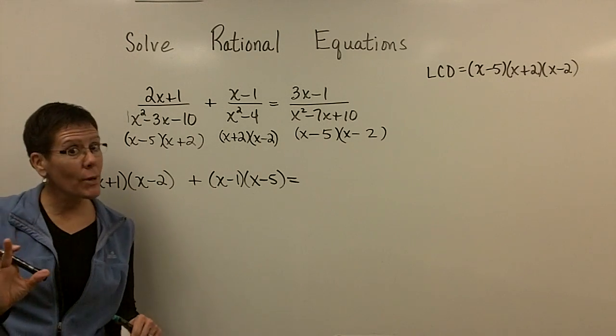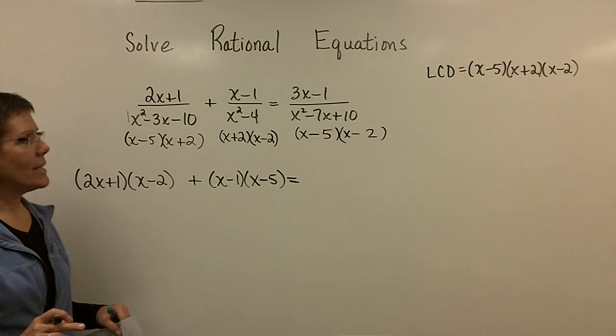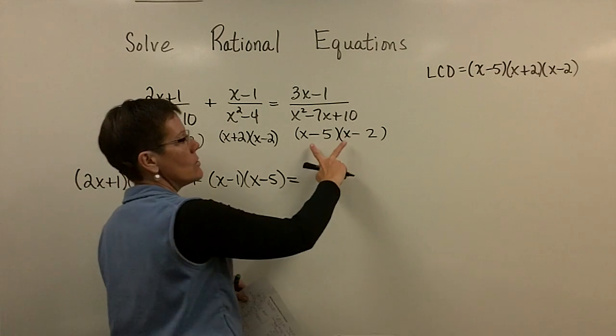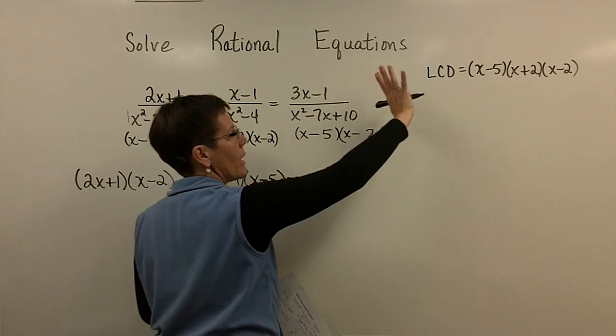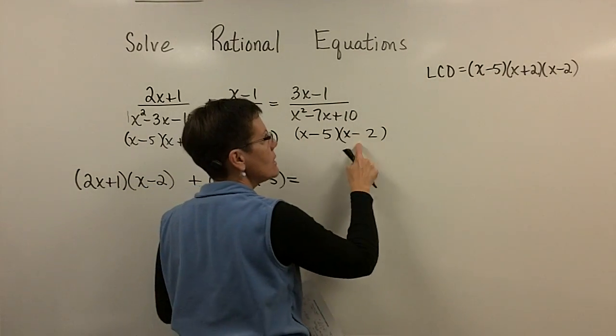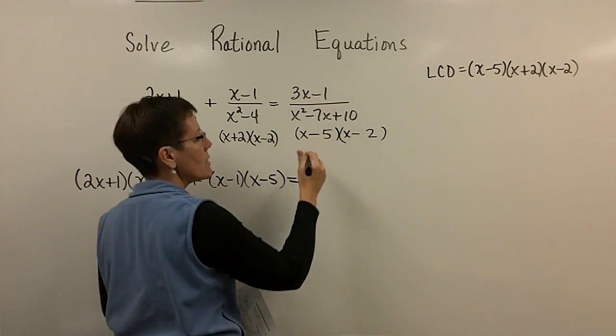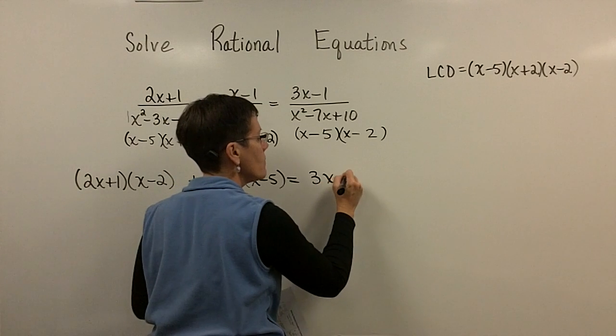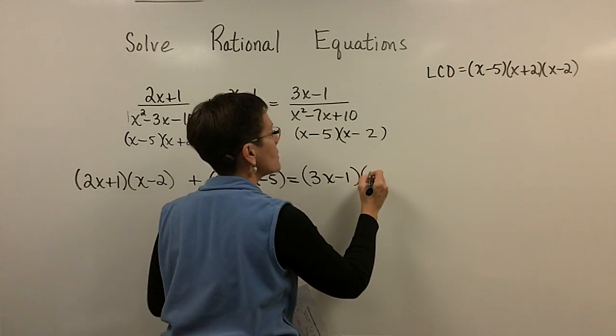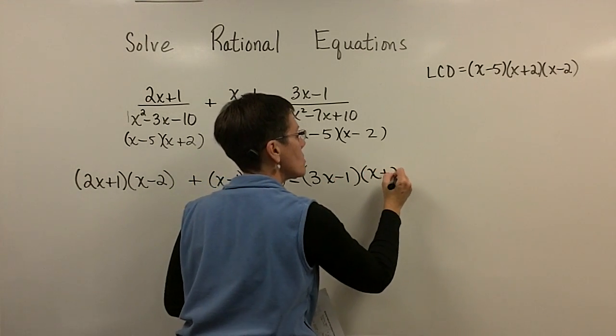So here, if I multiply this fraction by all of that, those would get cancelled out. So what piece is missing? Yes, the x minus 5. So this x minus 1 up here, it's got to be multiplied by that x minus 5. Denominators are gone. So the 3x minus 1 up here is a binomial, and it's got to get foiled or multiplied by the x plus 2.